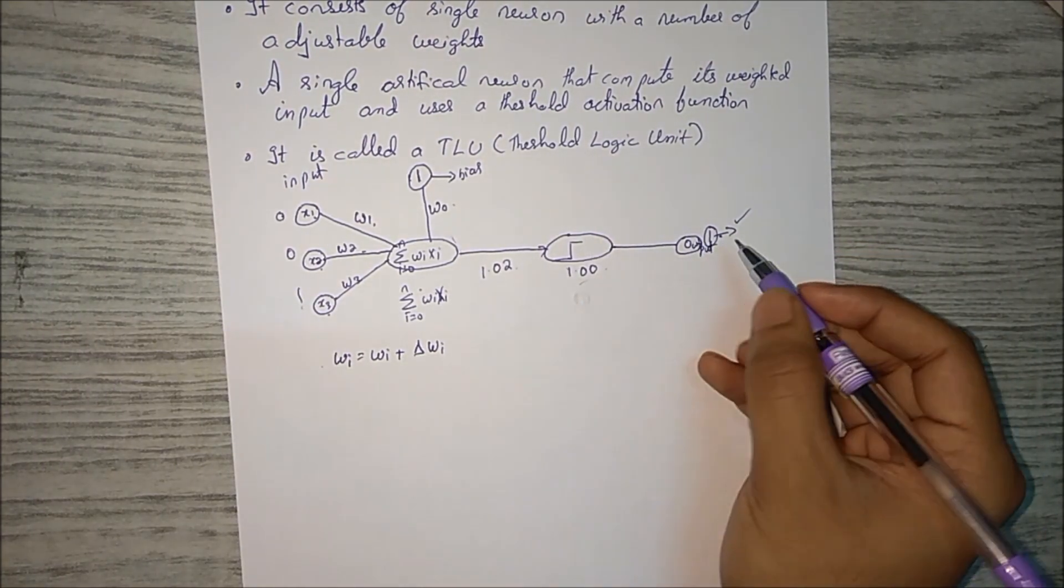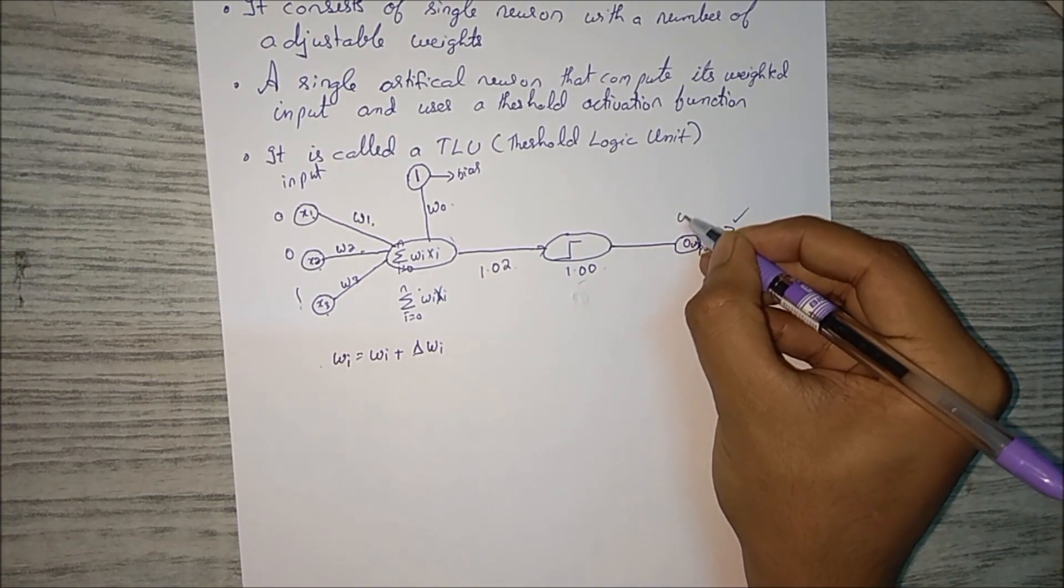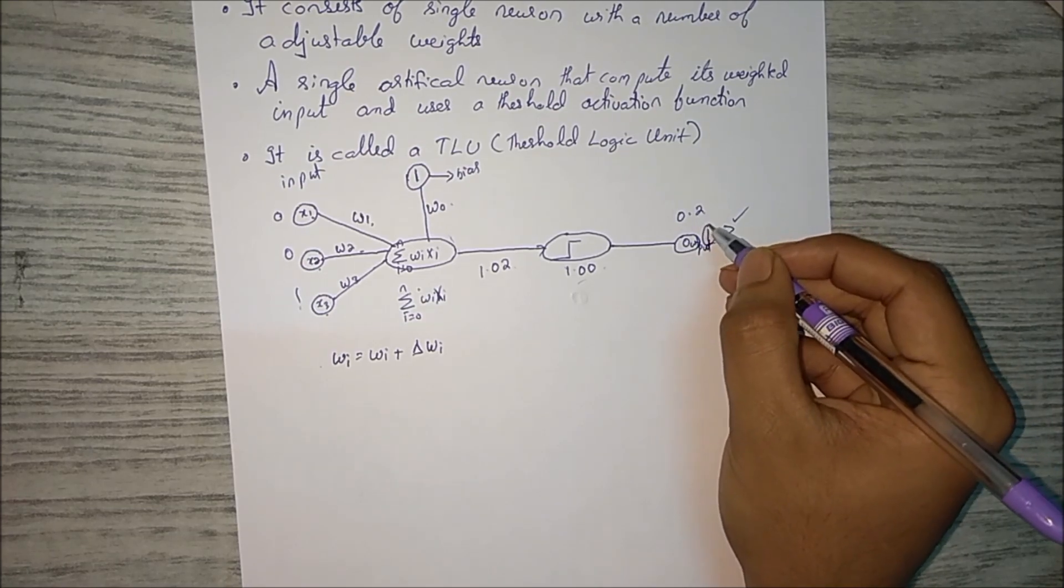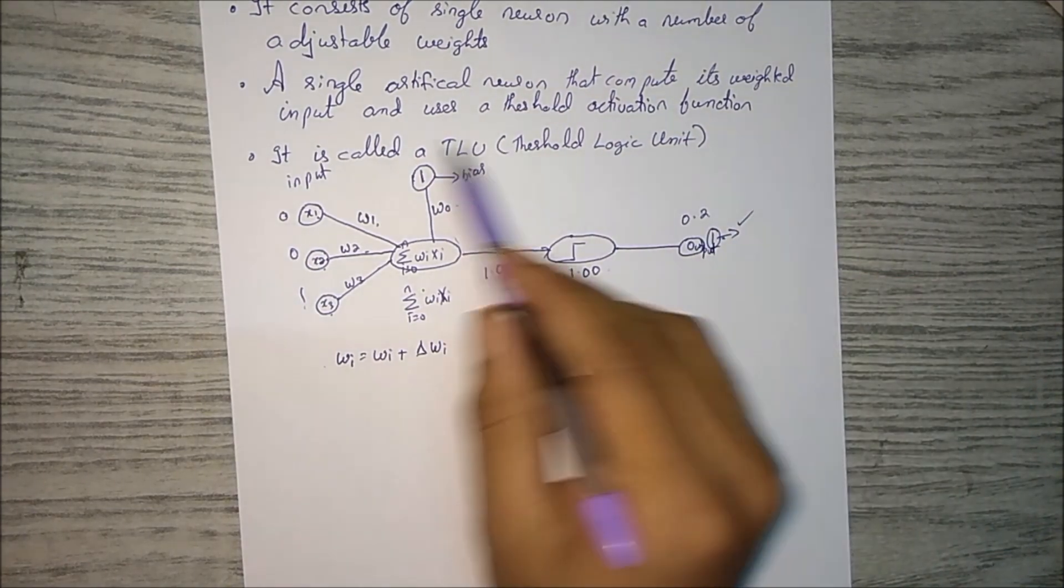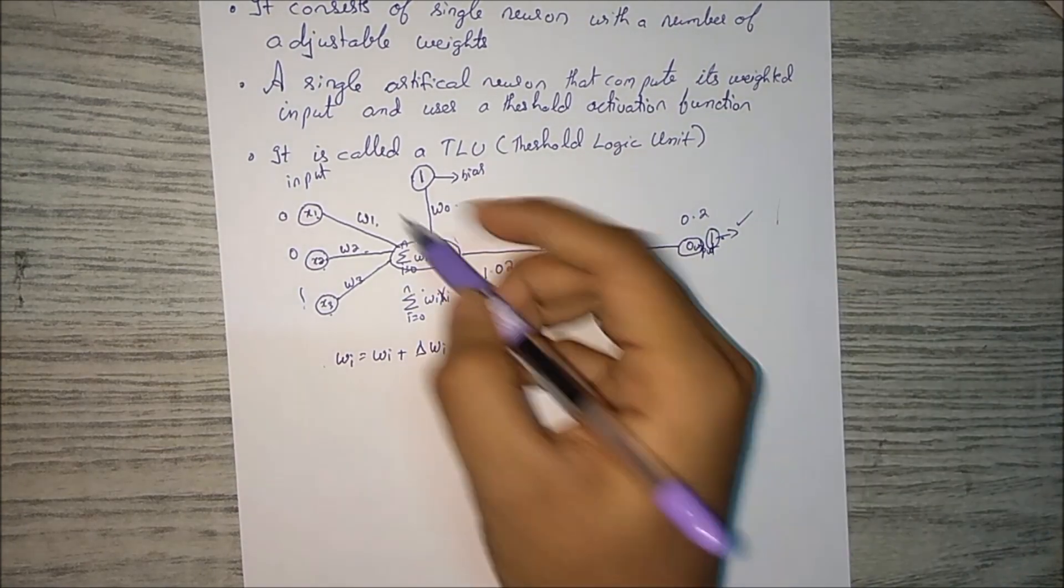Suppose first time when we did it we didn't get the output one, we got it as 0.2, let's say. So what we have to do - this hardware part will remain constant, so what we can change is the weight.